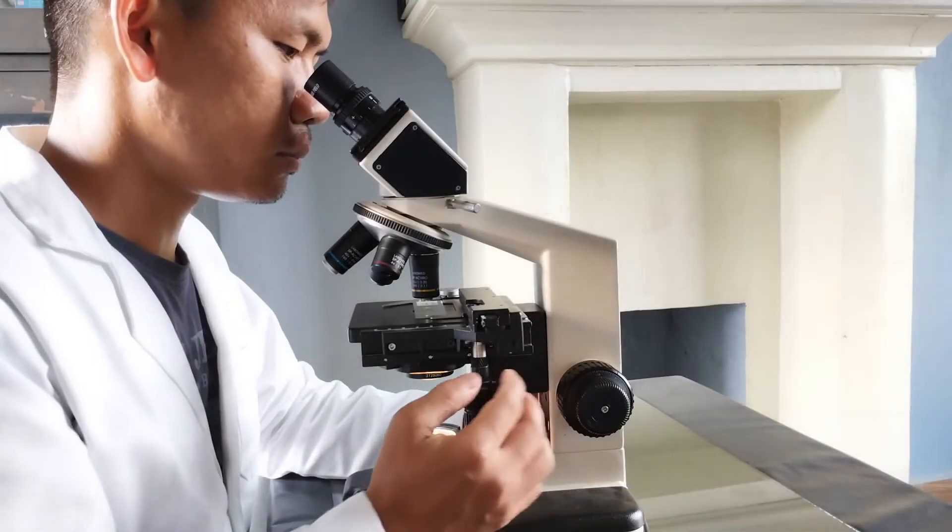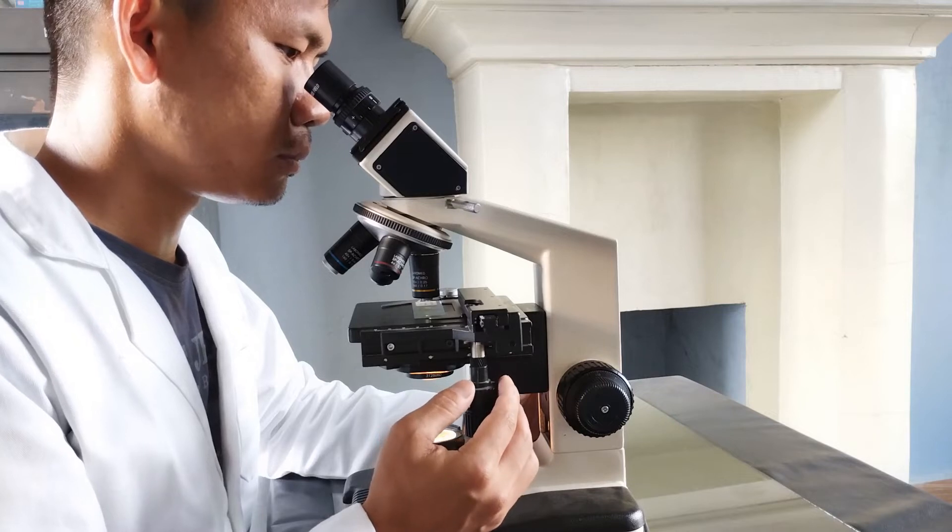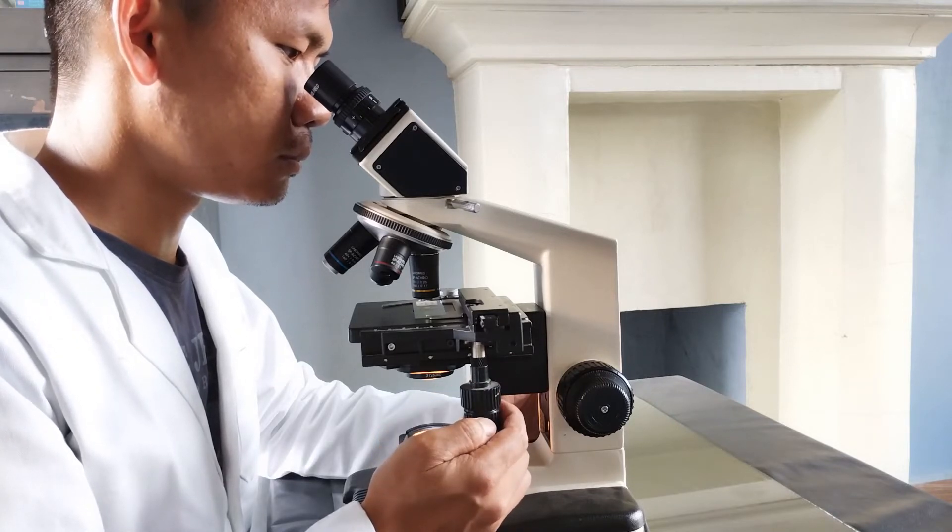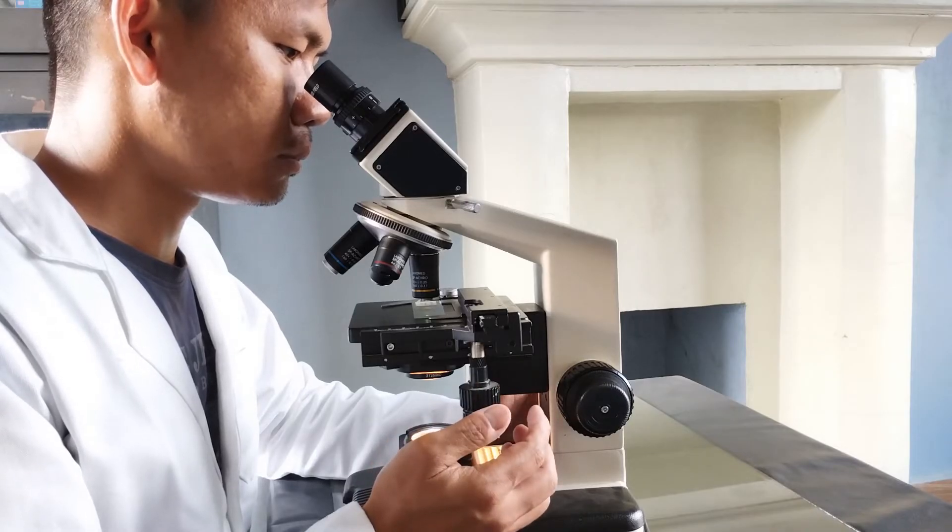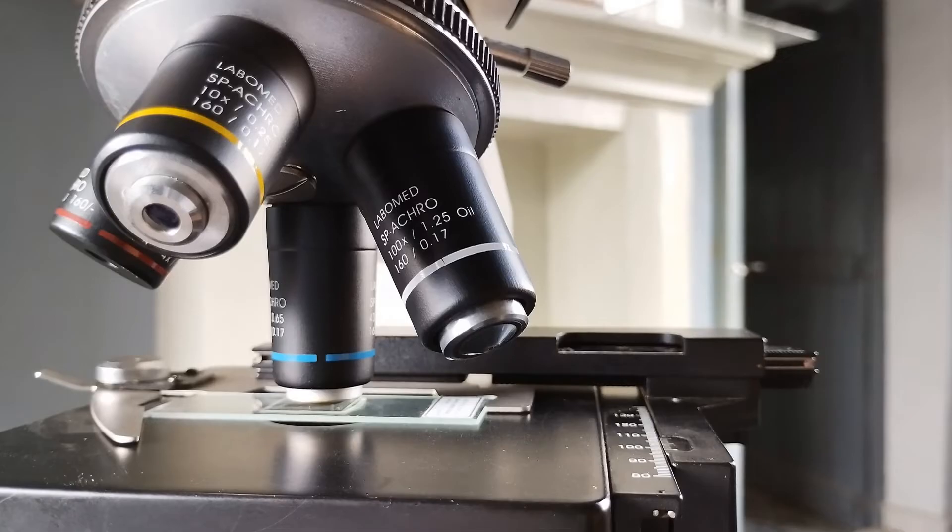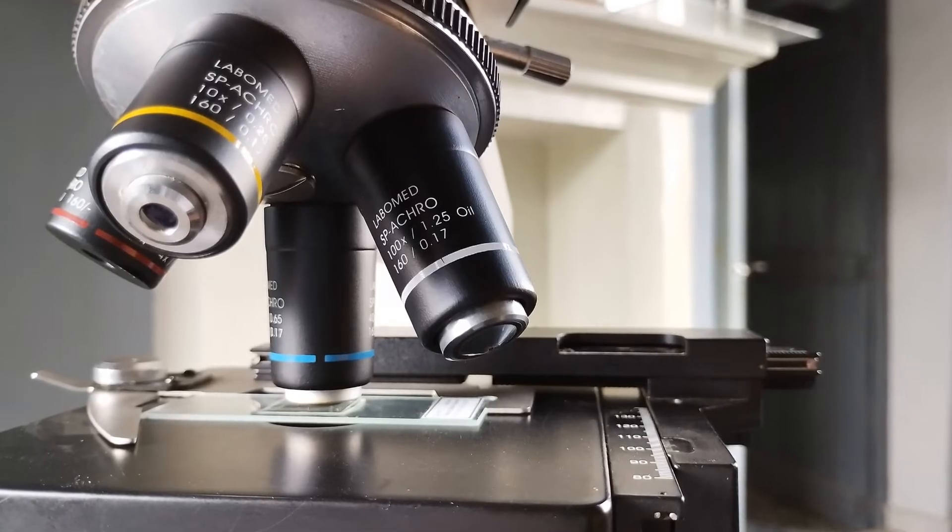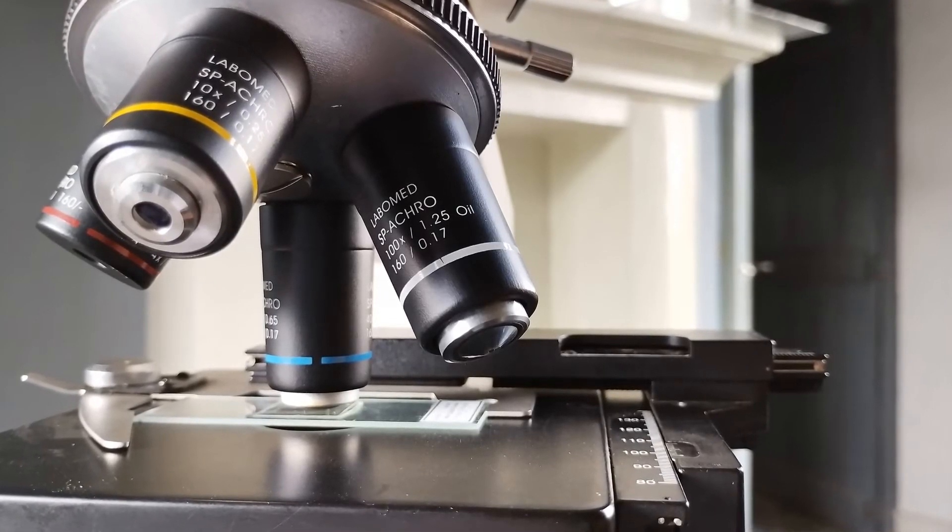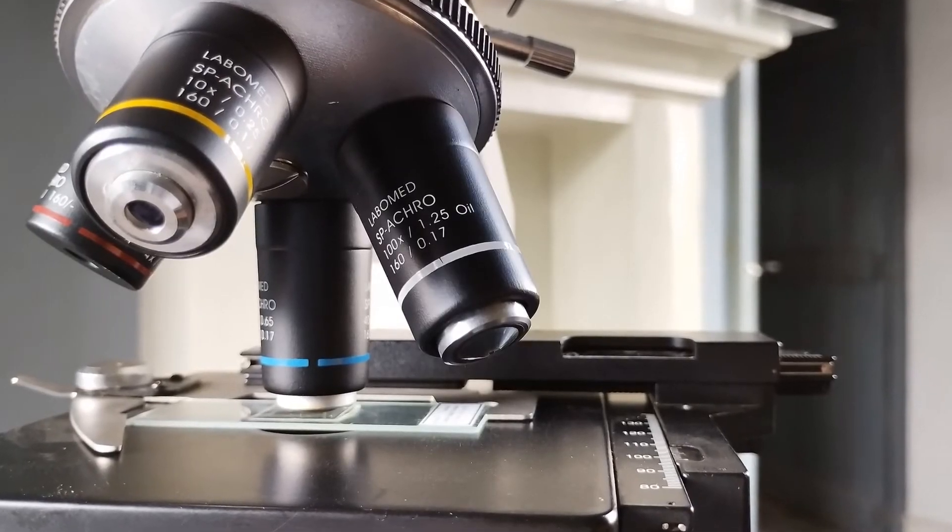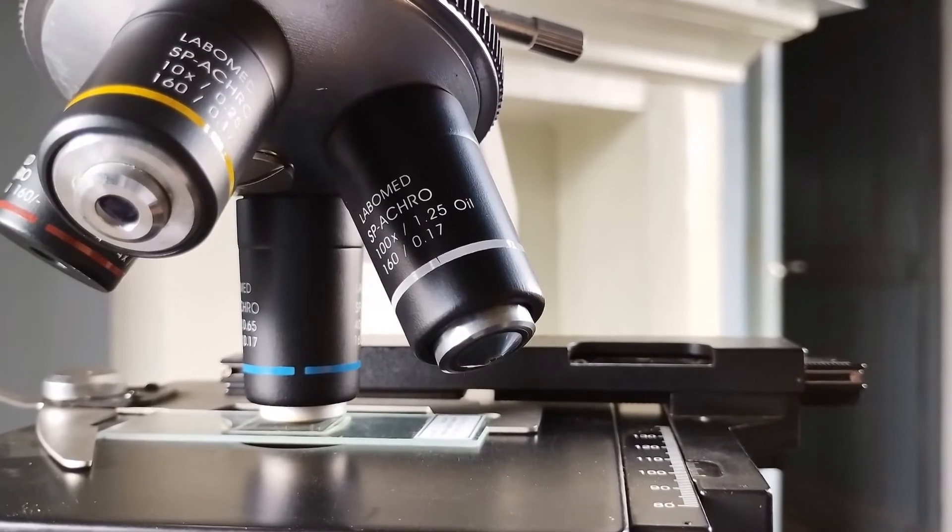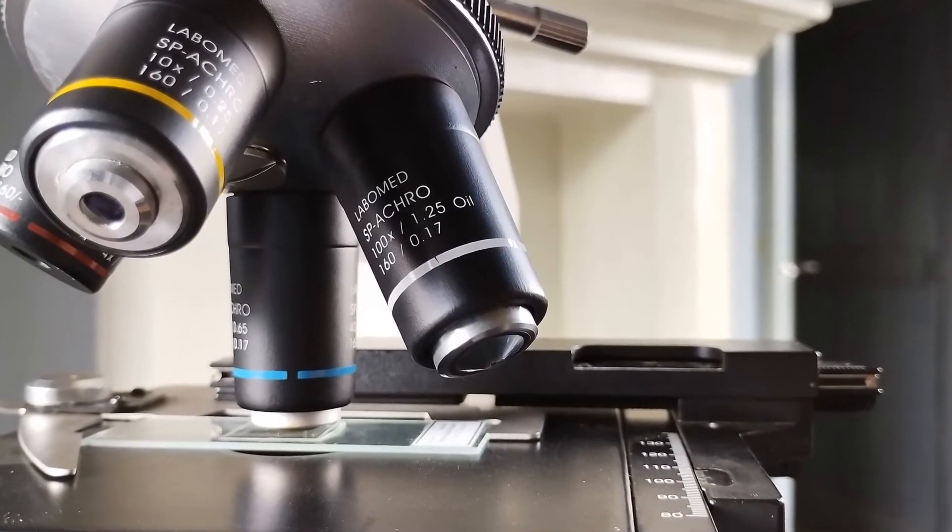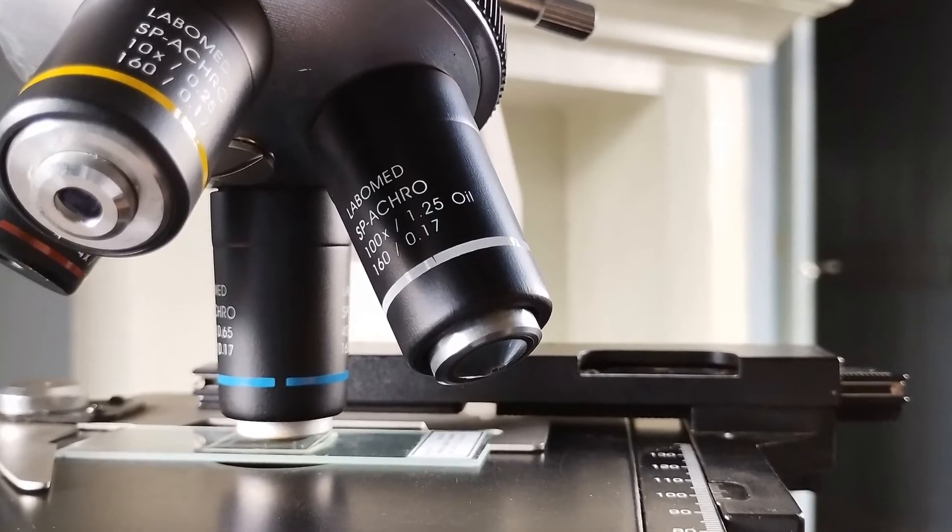Once you are done bringing the specimen image into focus under the low power objective, scan the specimen for the specific region of interest that you would like to observe and study further by adjusting the slide carefully and slowly sideways or up and down using the sliding screws. Once you have locked onto the region of interest, change the objective lens to the high power, which is usually 40 or 45x, by rotating the nose piece until the high power objective lens clicks into position aligning with the body tube and the hole in the center of the stage. Use only the fine adjustment knob to bring the image into clear focus.